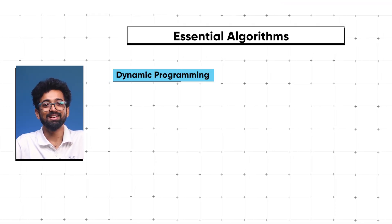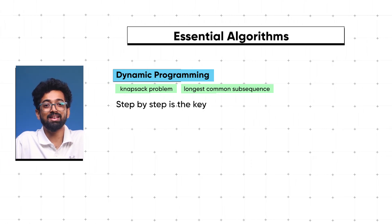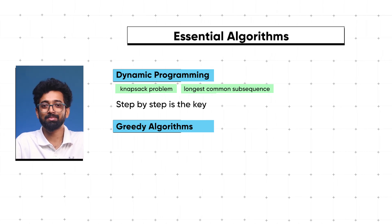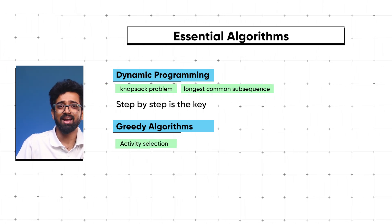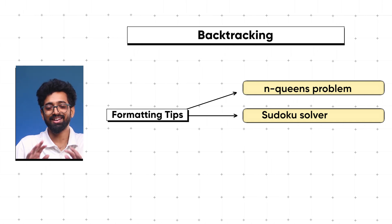Dynamic programming involves breaking down complex problems into smaller ones — try problems like the Knapsack problem and Longest Common Subsequence. Greedy algorithms make the best choice at each step — study problems like activity selection and minimum spanning tree. Backtracking explores all possible solutions by undoing and retrying — problems like the N-Queens problem and Sudoku solver are great examples.